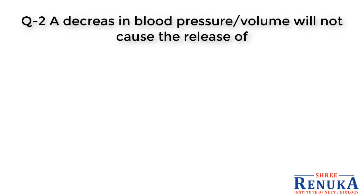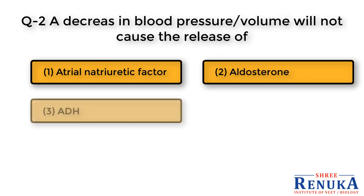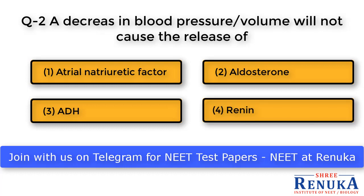Question number 2: A decrease in blood pressure or volume will not cause the release of — options are: 1. Atrial natriuretic factor (ANF), 2. Aldosterone, 3. ADH (anti-diuretic hormone), and 4. Renin.